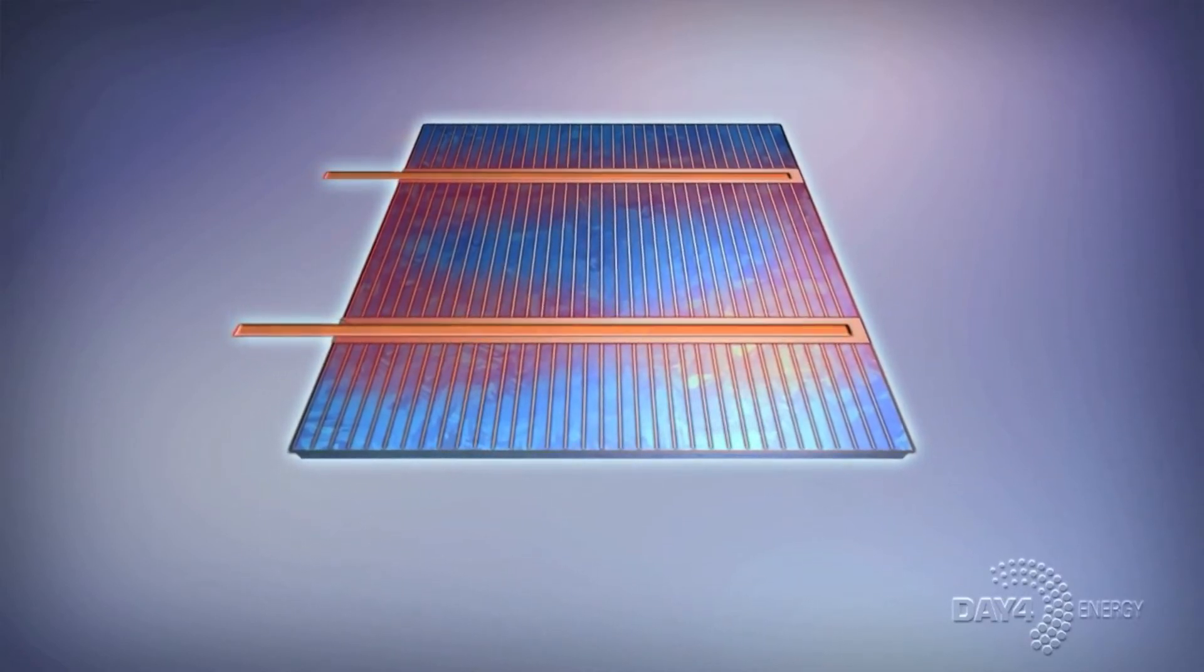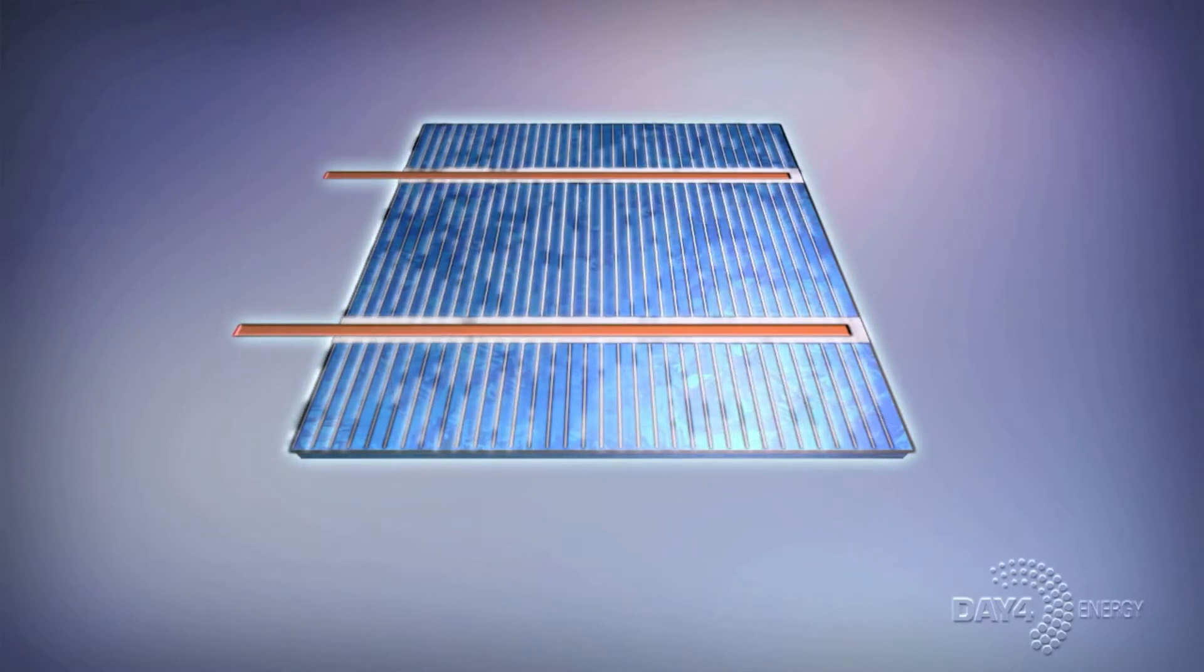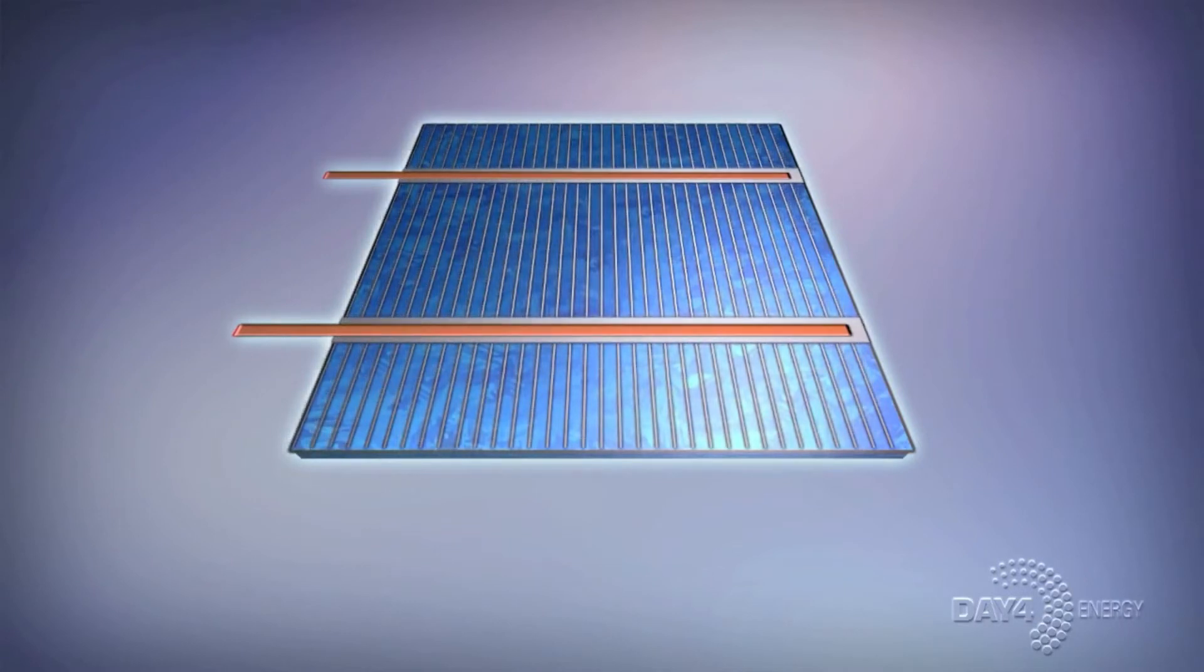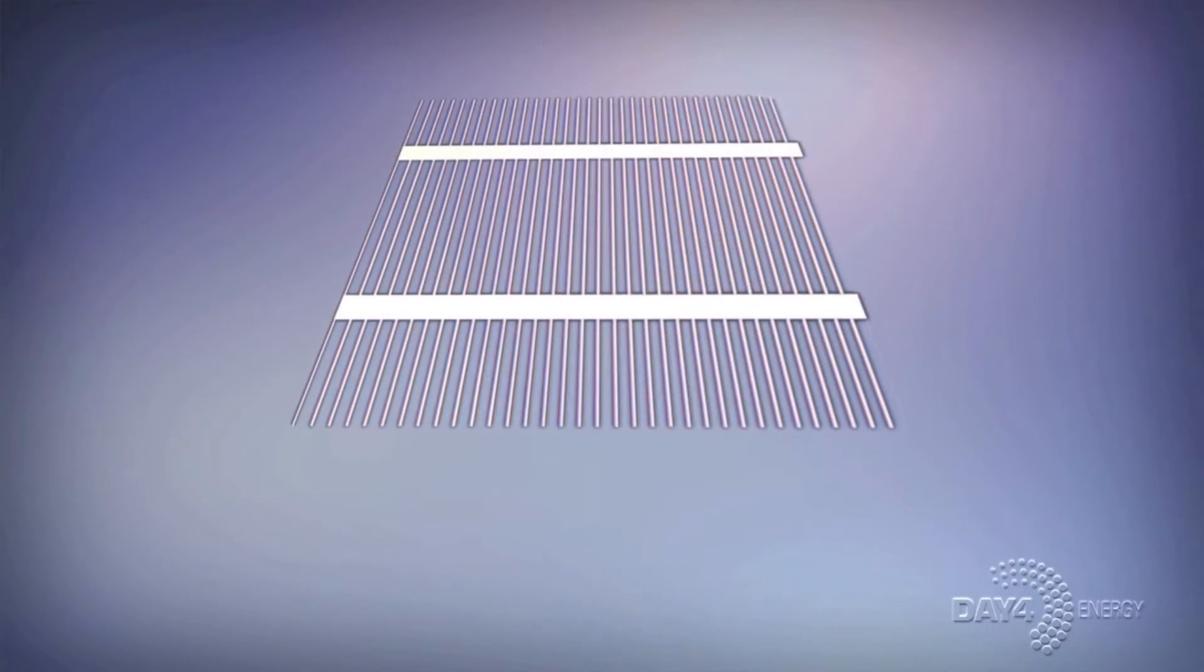This process can create cell breakage due to high soldering or welding temperatures and mechanical stress. And three, traditional solar cells make extensive use of silver particulates within their fingers and bus bars, reducing their efficiency. Our technology is different, more advanced, and the result is more energy.